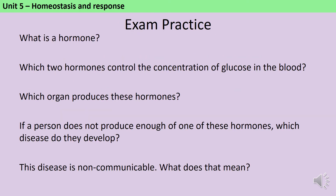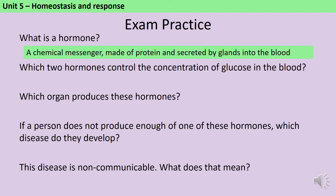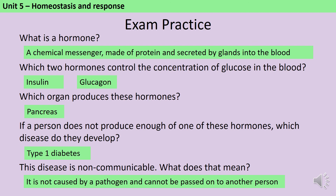Let's finish with some review questions. A hormone is a chemical messenger; they're made out of protein and secreted by glands into the bloodstream. The two hormones that control blood glucose are insulin and glucagon, and both are produced by the pancreas. If you don't produce enough insulin then you might develop type 1 diabetes, and the fact that this is non-communicable means it's not caused by a pathogen and so can't be passed on to another person.